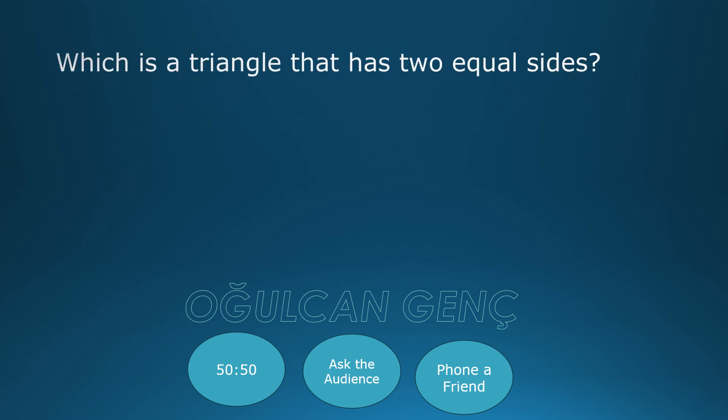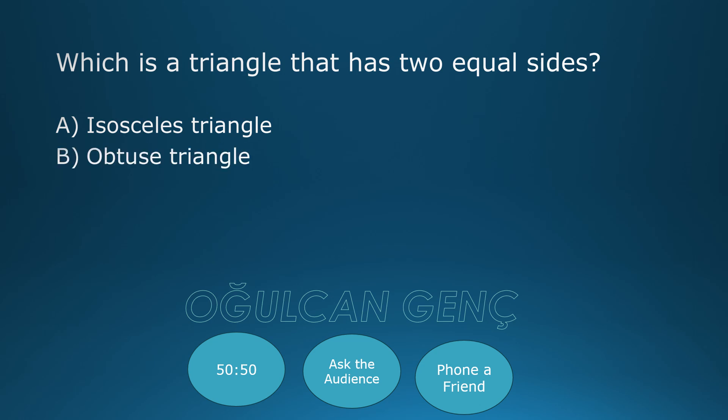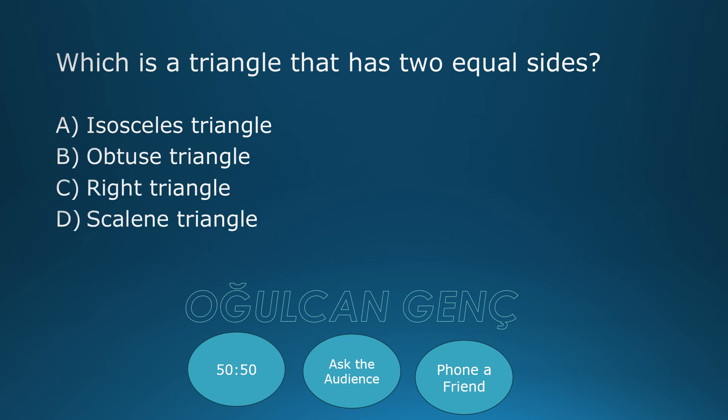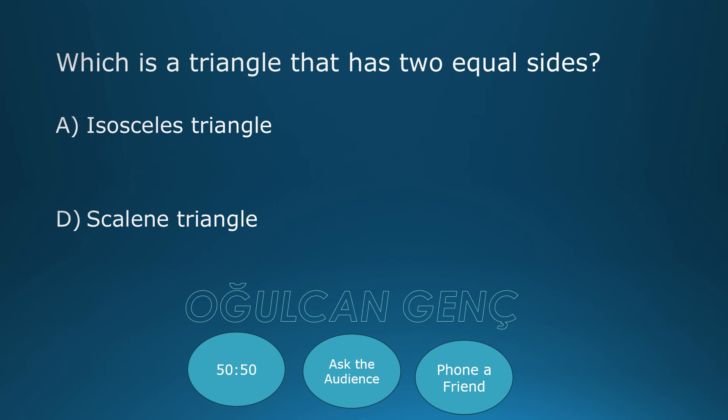Which is a triangle that has two equal sides? Options: Isosceles triangle, Obtuse triangle, Right triangle, Scalene triangle. The contestant uses the 50-50 lifeline, leaving Isosceles triangle and Scalene triangle. Final answer: Isosceles triangle, option A. Correct answer is Isosceles triangle.